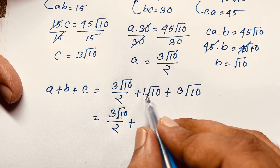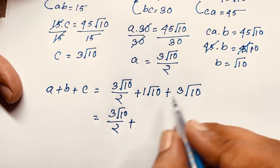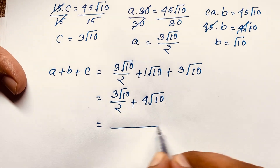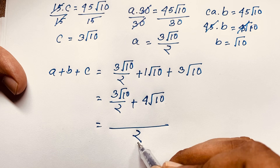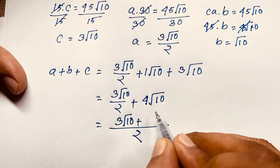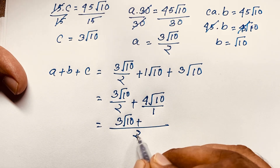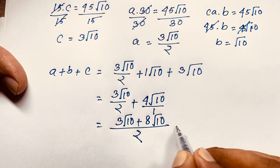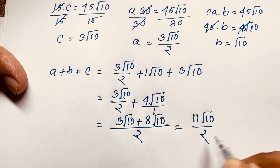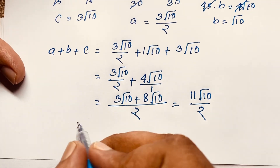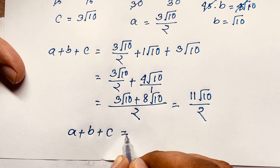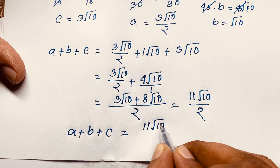Using a common denominator of 2: √10 + 3√10 = 4√10, and with denominator 2 that becomes 8√10/2. Adding 3√10/2 + 8√10/2 = 11√10/2. So the final answer is a + b + c = 11√10/2.